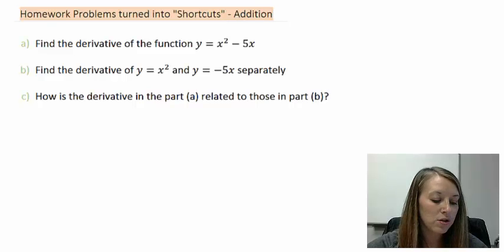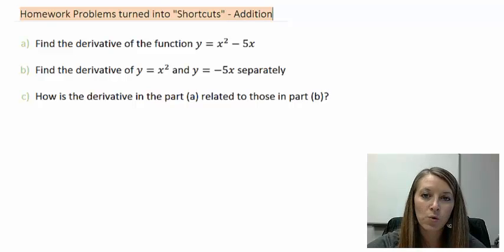All right, in part A, we want to find the derivative of the function y equals x squared minus 5x. In part B, we want to separate it out and figure out what the derivative of x squared is and the derivative of negative 5x is.